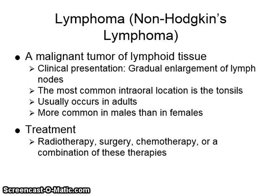Lymphoma, also known as non-Hodgkin's lymphoma, is a malignant tumor of lymphoid tissue. The clinical presentation is the gradual enlargement of lymph nodes. The most common intraoral location is the tonsils. It usually occurs in adults and is more common in males than in females. It is treated with radiotherapy, surgery, chemotherapy, or a combination of all.